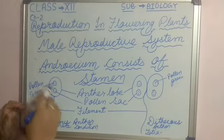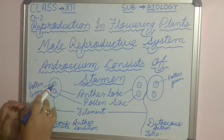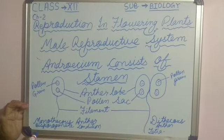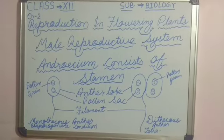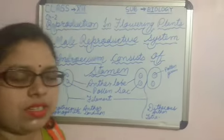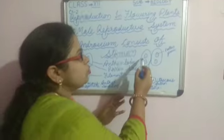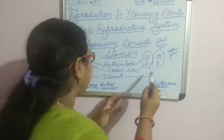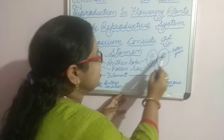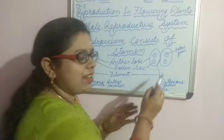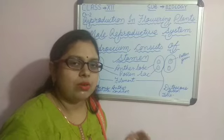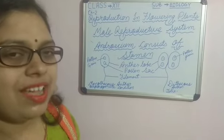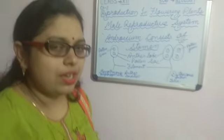In this monothecous anther, what we see is they have two circular structures which are actually the pollen sacs — that's why they are also known as bisporangiate condition. In maximum types of angiospermic flowers, especially 60% of them, there is a two-lobe structure known as the dithecous anther, and they have a tetrasporangiate condition, meaning they have four pollen sac-like structures in which the pollen grain forms.